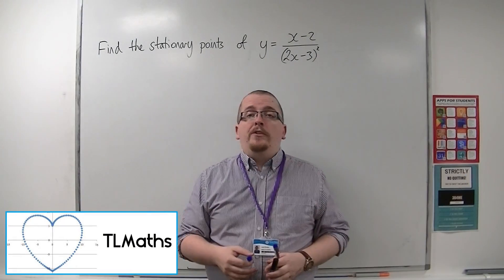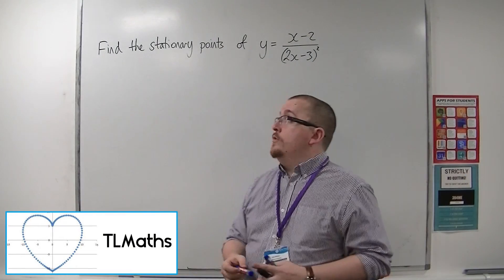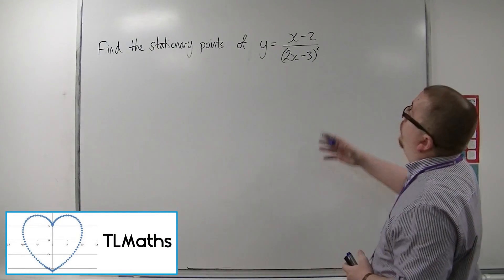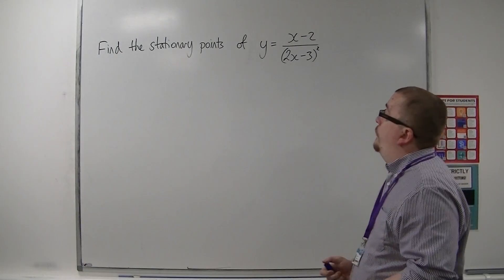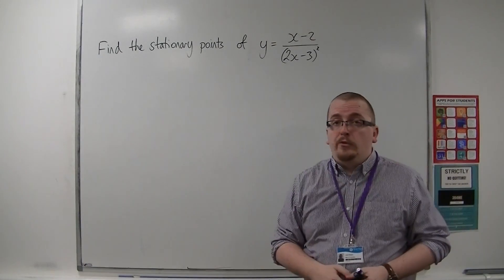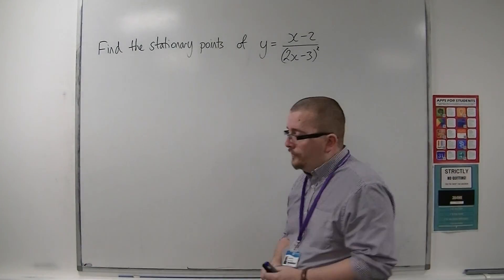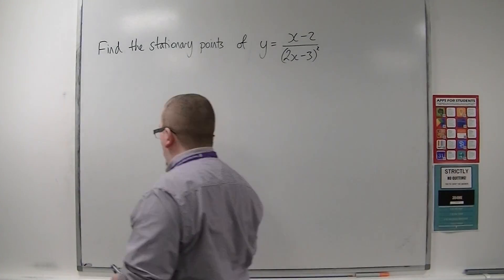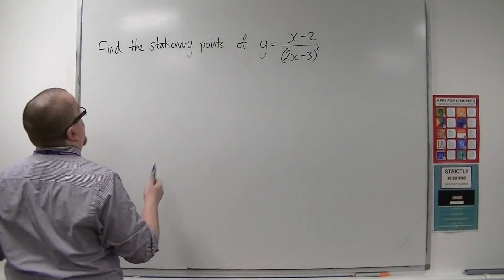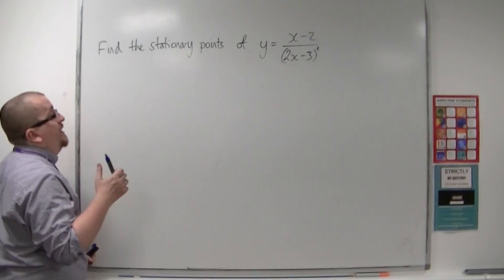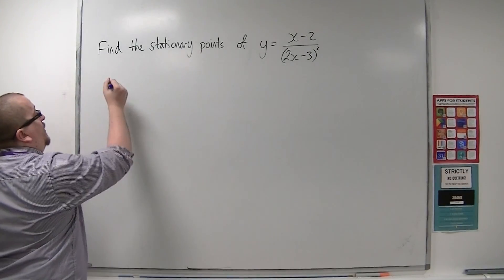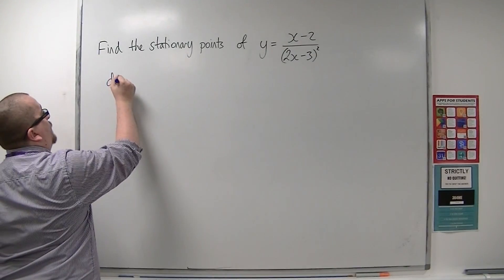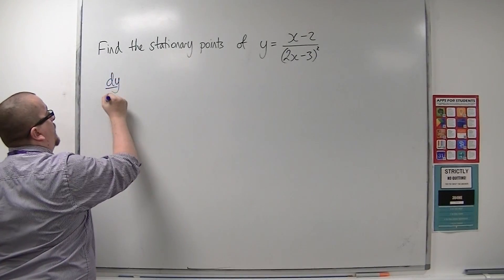So let's say we're asked to find the stationary points of y equals x minus 2 over 2x minus 3, all squared. First of all, we're going to use the quotient rule in order to differentiate it and find dy by dx.